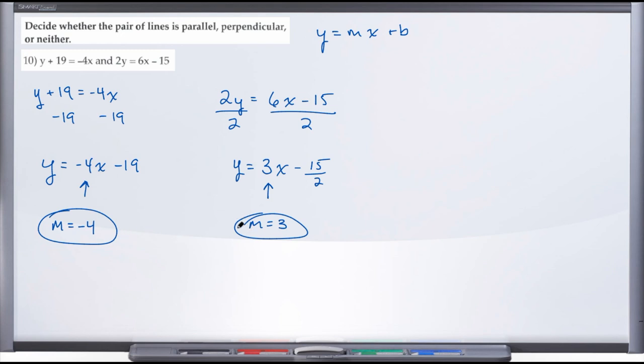These slopes are not the same, so they're not parallel. And so our only option then is neither. So if we were to graph these lines on a rectangular coordinate plane, we would see that these two lines, while they do intersect, they are not parallel nor perpendicular. And so we would say that these two lines are neither.